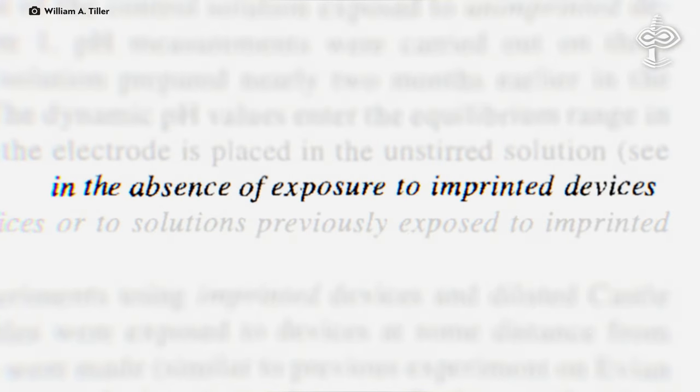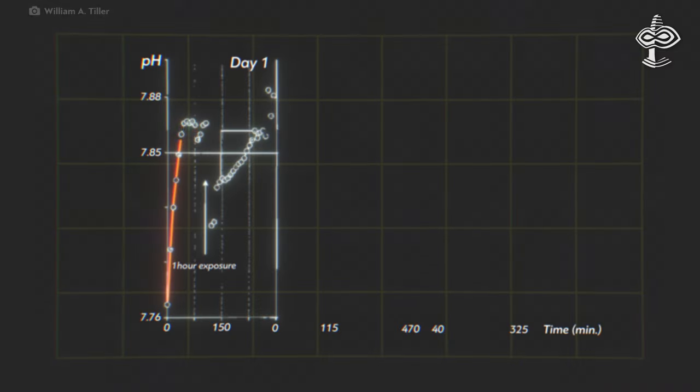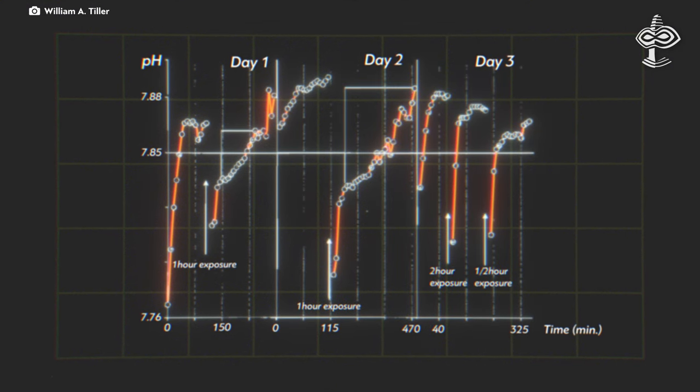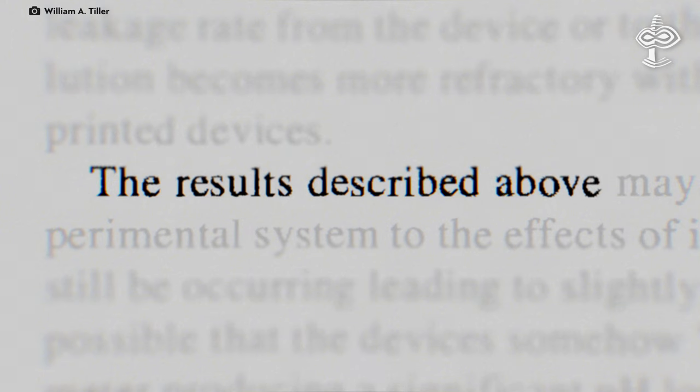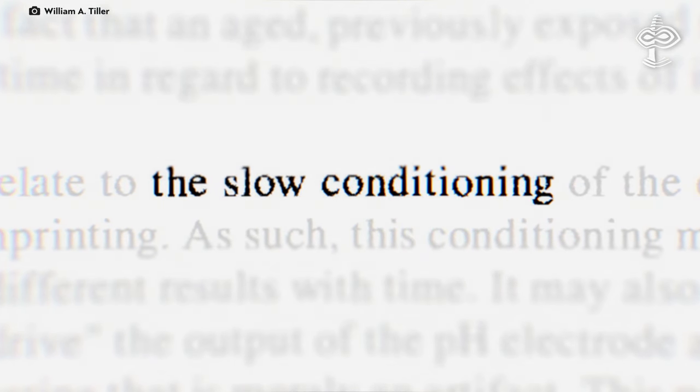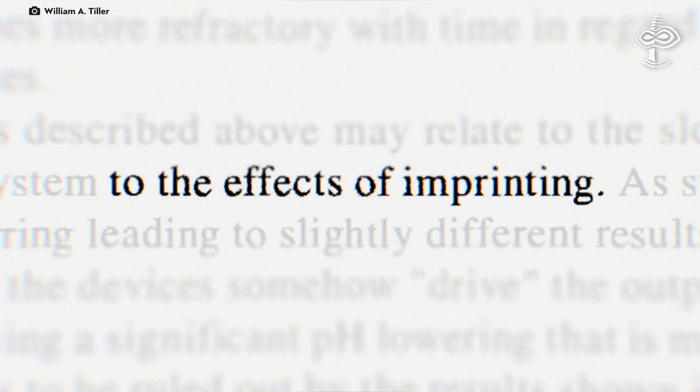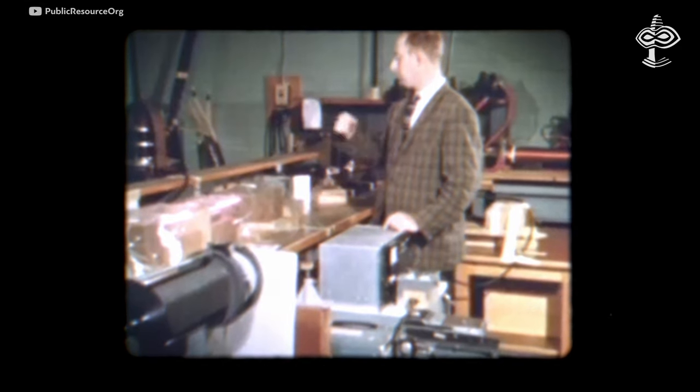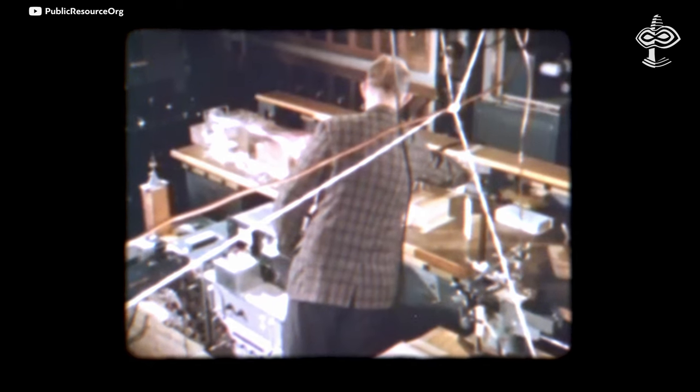And when that happens, the laws of physics in that particular space no longer operate as they did before. When they kept running the same experiment over and over again, Tiller says the laboratory space began to become conditioned so that the same result would happen more strongly or more quickly. Now, in physical terms, what does this mean? What has actually happened to the space of the laboratory room?